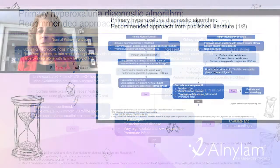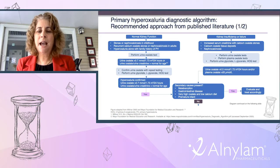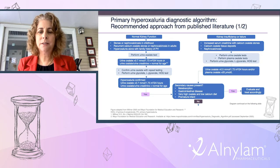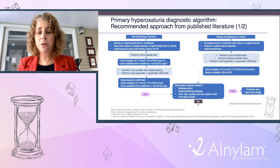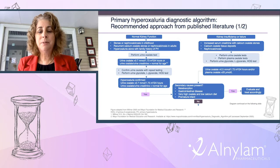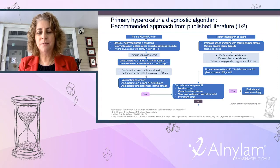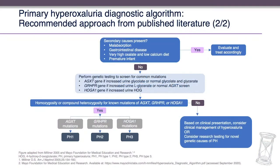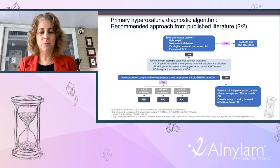On the right side of the algorithm, if the patient presents with renal failure or insufficiency with increased creatinine and calcium oxalate stones, calcium oxalate tissue deposits, evidence of systemic oxalosis, or nephrocalcinosis, in addition to urine oxalate tests and metabolites, we also perform plasma oxalate levels. If both urine and plasma oxalate levels are elevated, again ask whether secondary causes or enteric hyperoxaluria risk factors are present; if absent, perform genetic testing for primary hyperoxaluria mutations.